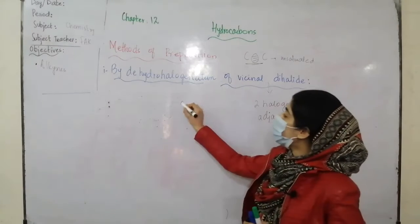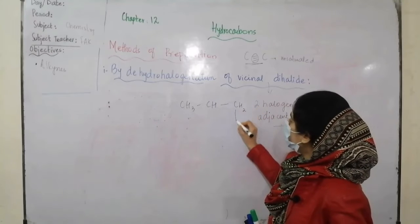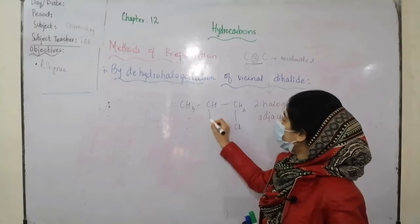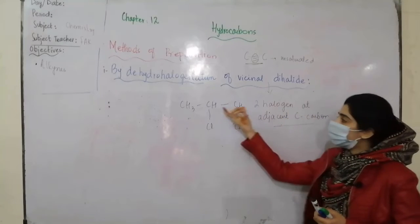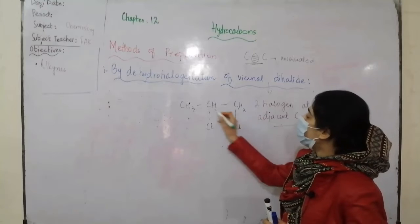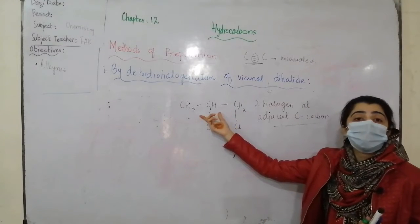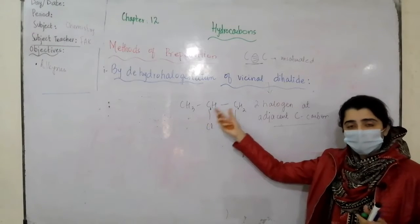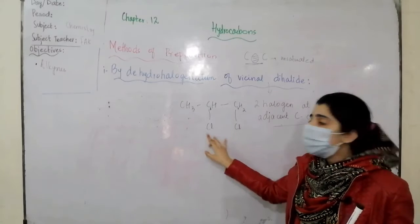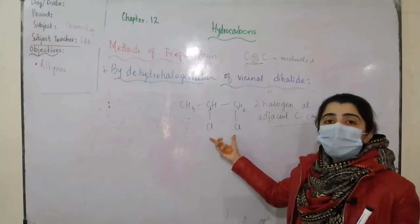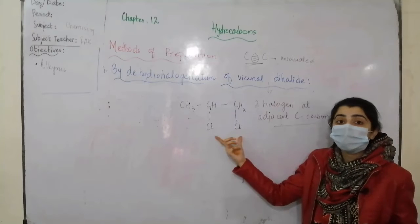For example, consider CH3-CH-CH2. If you have a chloride attached to one carbon and a chloride attached to the adjacent carbon — carbon number one and carbon number two — they are both adjacent to one another, present side by side. On both carbon number one and carbon number two, two halide ions are present as chloride ions. Therefore, they make up a vicinal dihalide.